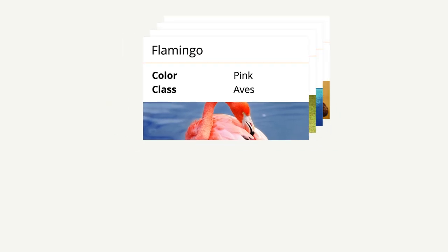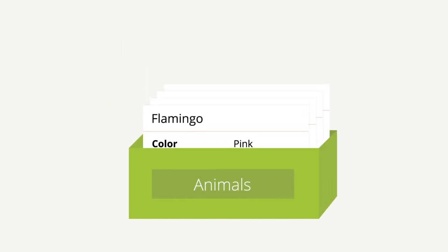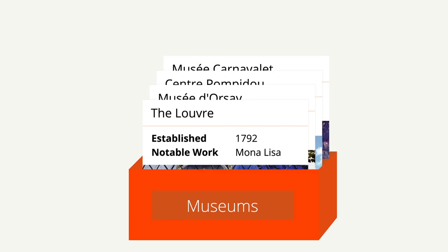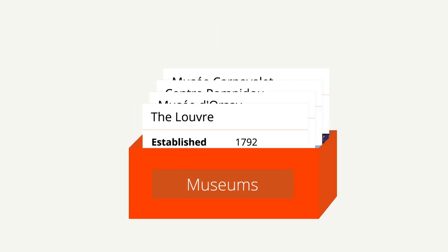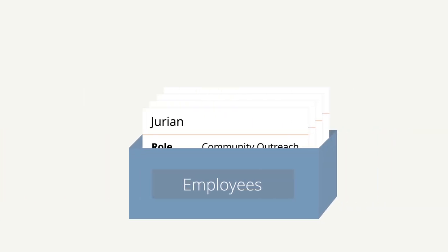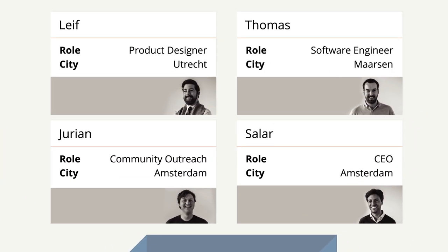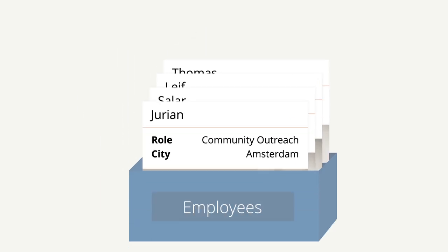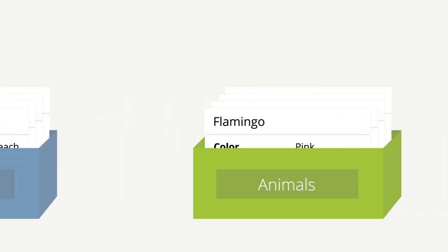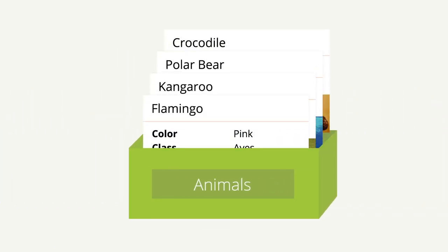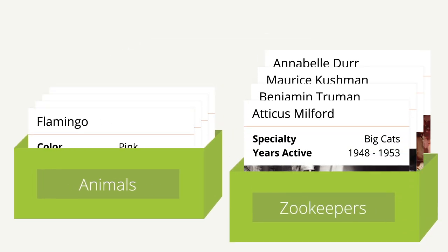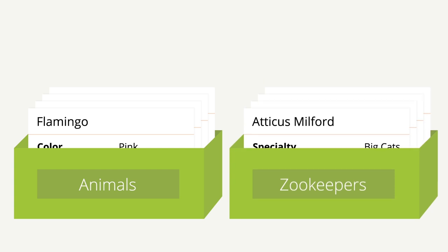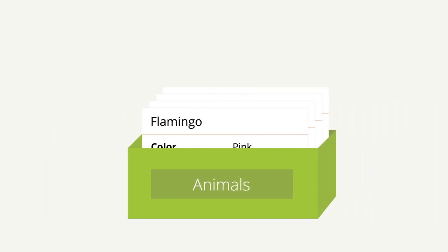To keep things organized, data cards are grouped into collections. In a SILK about Paris, there might be a collection of museum data cards. Or, in a company directory, there might be a collection of employee data cards. In our San Diego Zoo SILK, we have a collection of animal data cards. You can, of course, have multiple collections in the same SILK, as in this zookeeper collection. But let's just focus on the one for now.